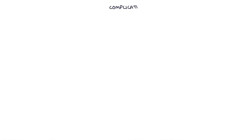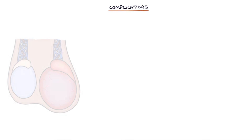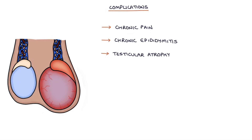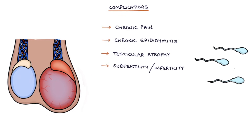Finally, let's talk about the complications. Epididymoorchitis can lead to chronic pain in the testicle, chronic epididymitis, testicular atrophy, subfertility or infertility, and the development of a scrotal abscess.